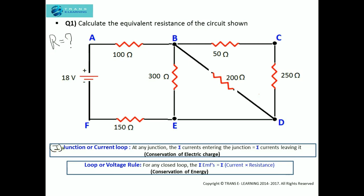The junction or current loop at any junction. First of all, what is a junction? You can see here that this is a junction, this one is a junction, and this one is a junction.